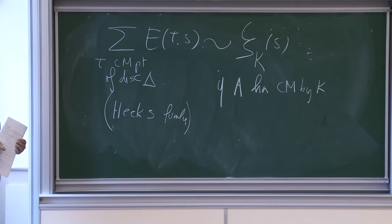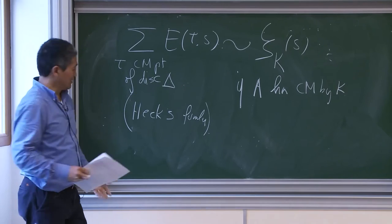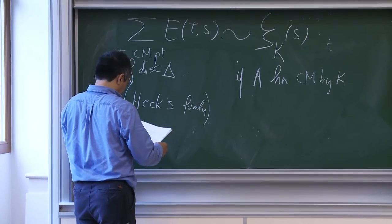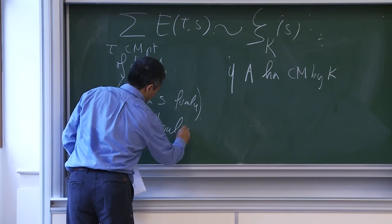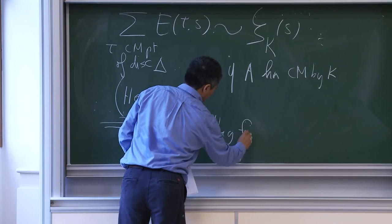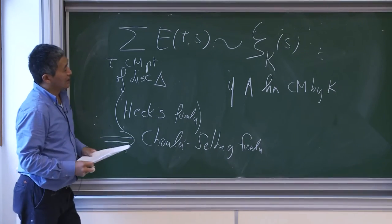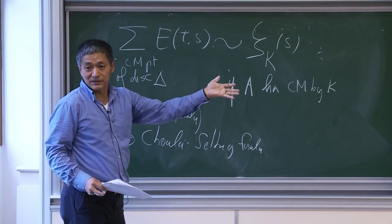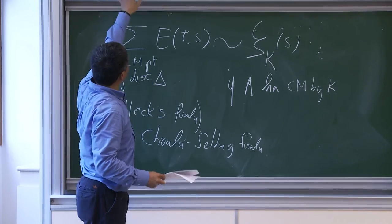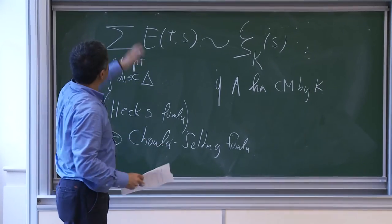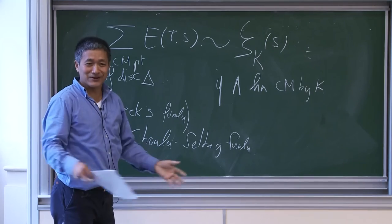The proof of the Chowla-Selberg formula uses the following steps: evaluate the Eisenstein series at CM points, then apply Hecke. You calculate the sum of E(τ_i, s) over CM points of discriminant Δ. This sum equals essentially the zeta function of K at s, if A has CM by K. So the computation reduces to properties of L-functions of imaginary quadratic fields.